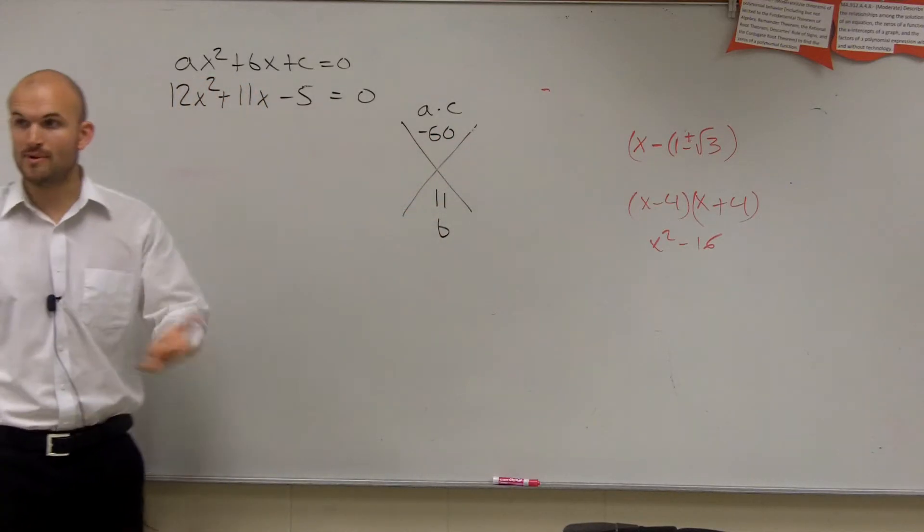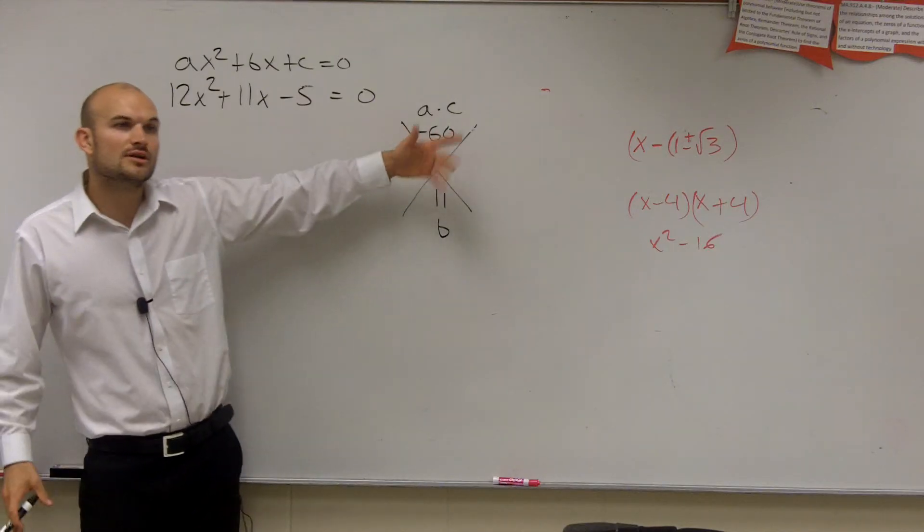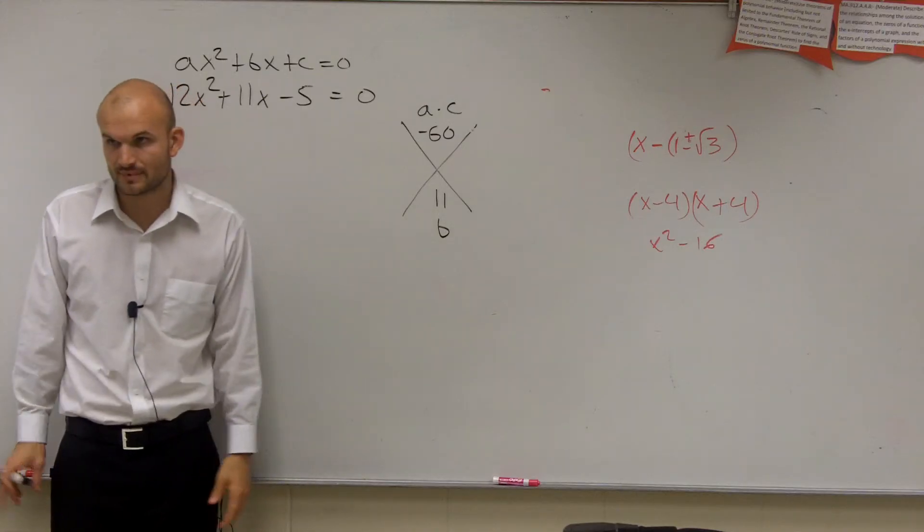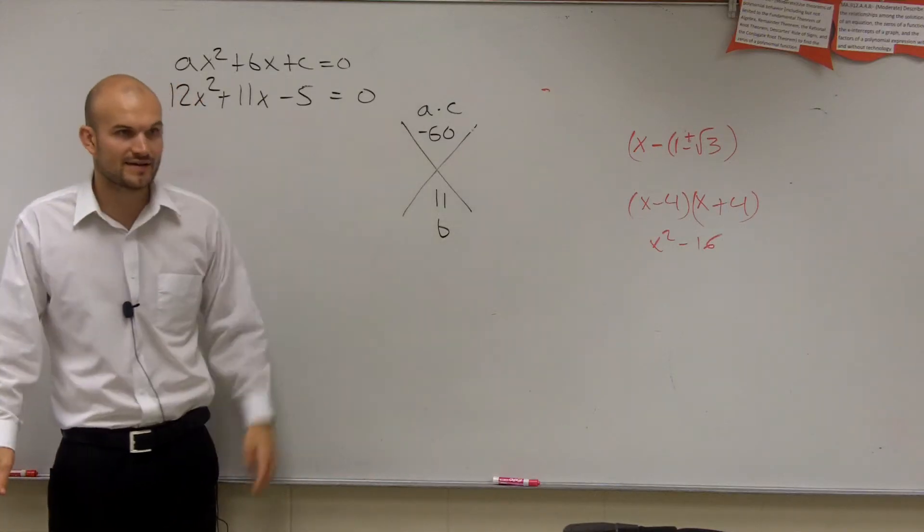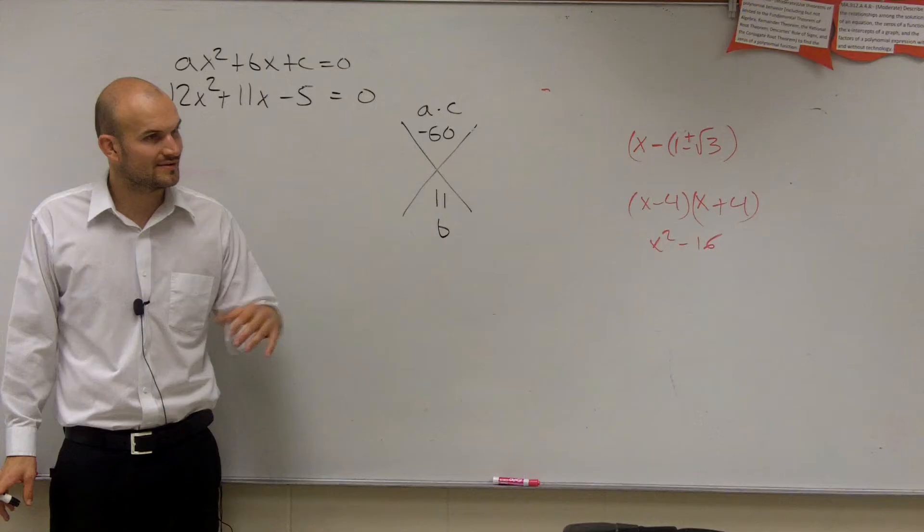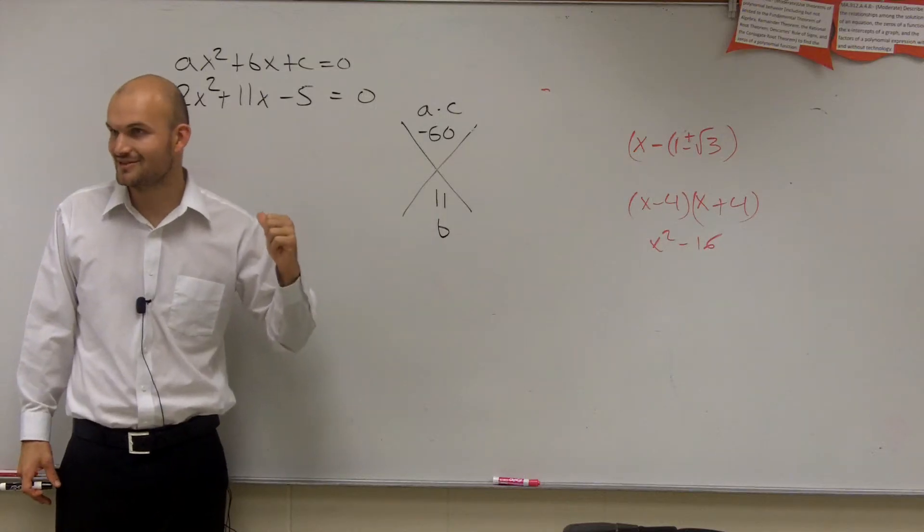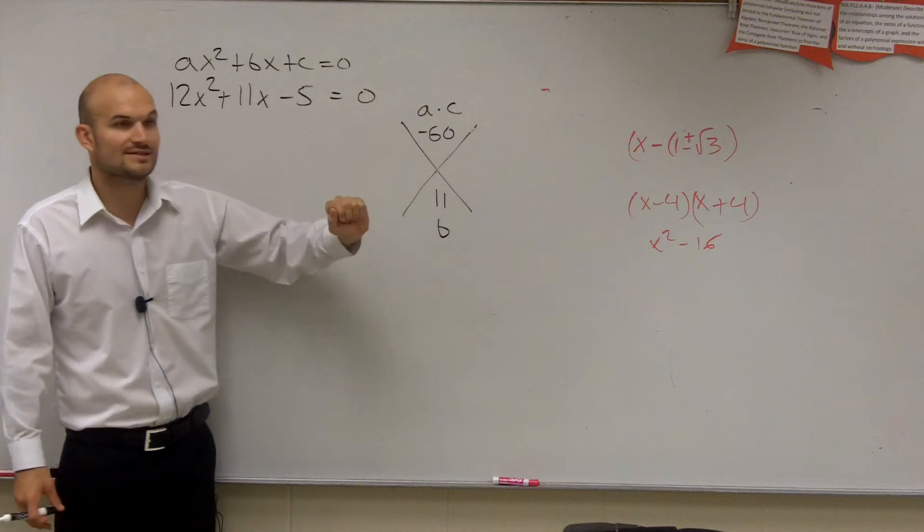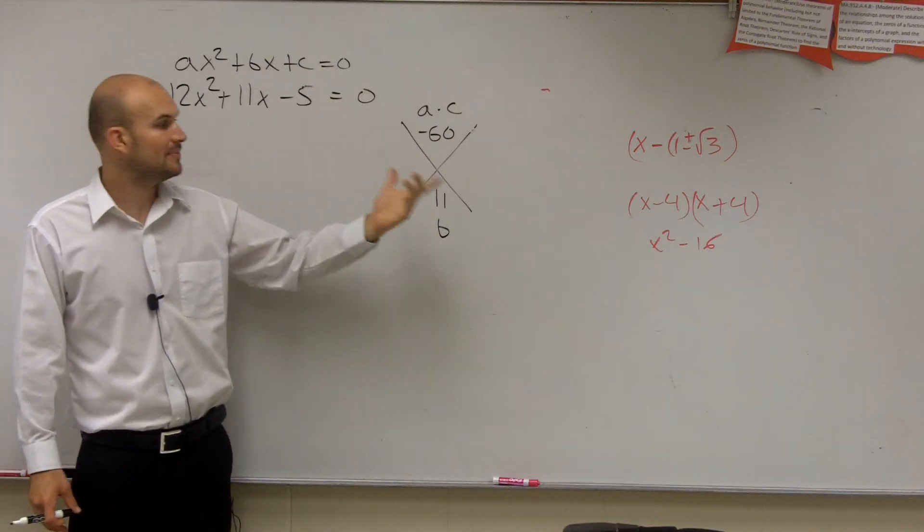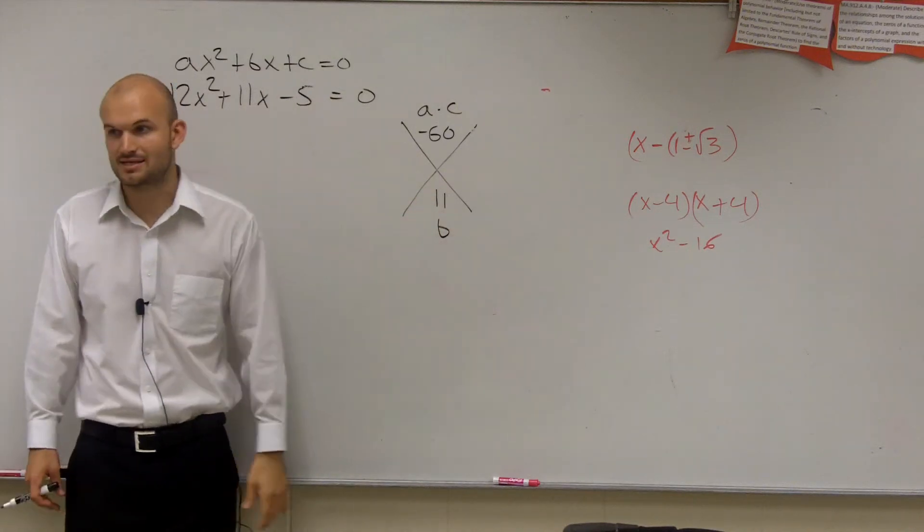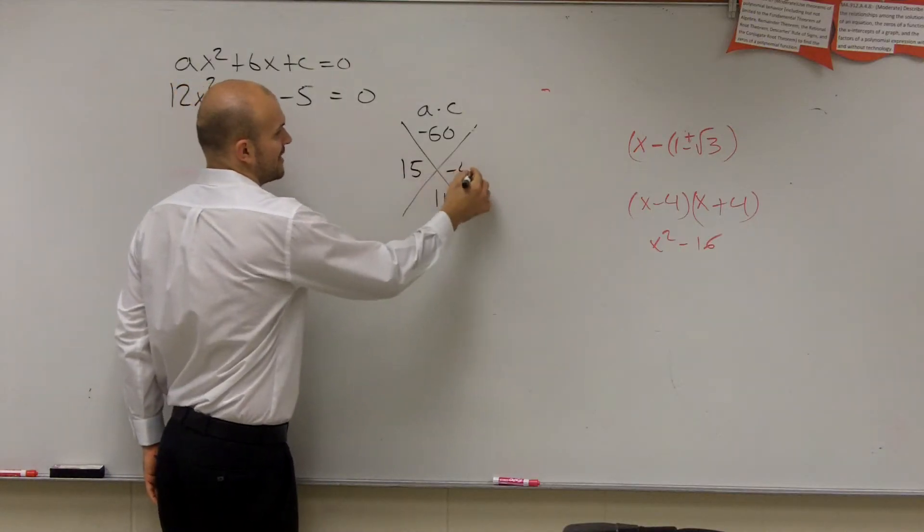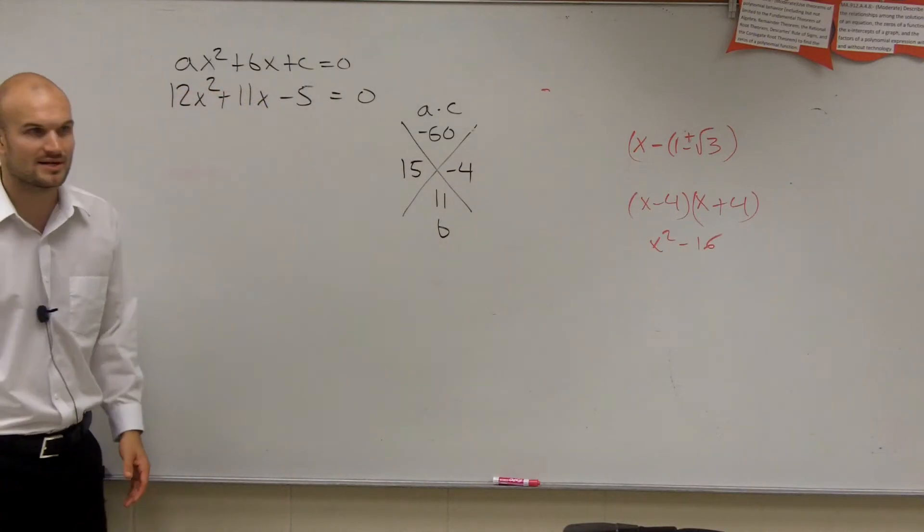Now we go back through, remember like that one little worksheet we worked on? What two numbers multiply to give us negative 60, but then add to give us 11? So you've got to think, what are all the factors of negative 60? We've been talking about that with polynomial factors. So what are the factors of negative 60 though? They're going to multiply to give us negative 60, but then add to give us a positive 11. And we get positive 15, negative 4.